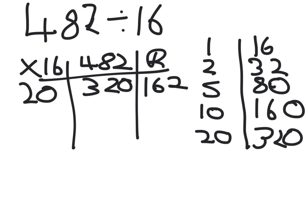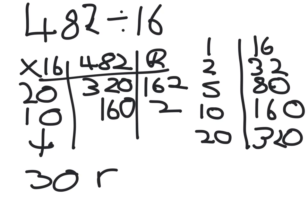The next one closest is 10 lots which is 160. And then 162 take away 160 is 2. You can't do any more so you add these ones up here which makes 30 and your remainder 2.